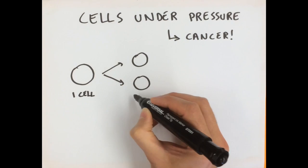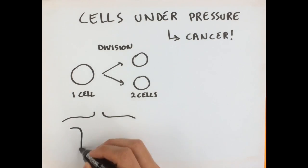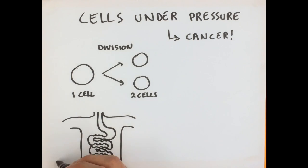Cells divide in our body all the time. For instance, in the lower part of the gut, the colon, cells are born and die so quickly that almost all cells are renewed every day. The colon that you have today is different from the colon that you had yesterday.